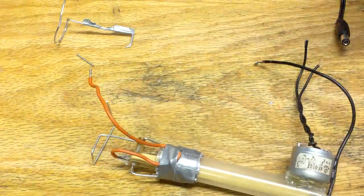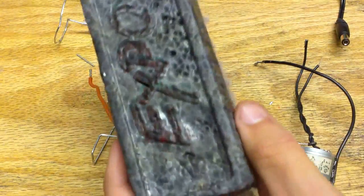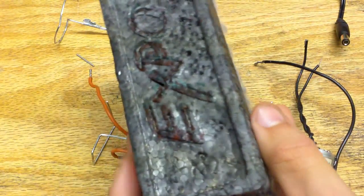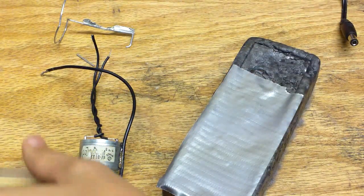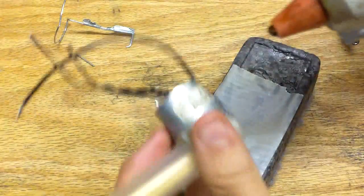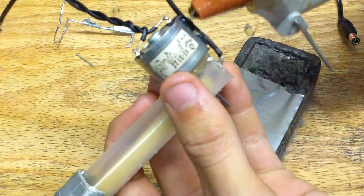Now we need to mount it to something. In my case I have a whiteboard eraser. I added a strand of duct tape to the eraser to prevent the hot glue from melting the foam. Now glue the motor to the duct tape.